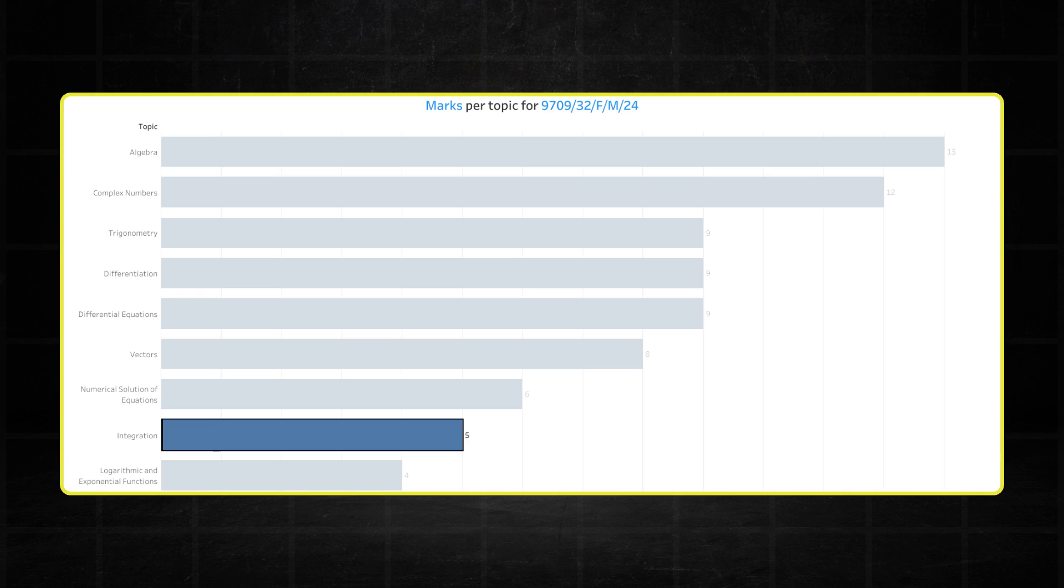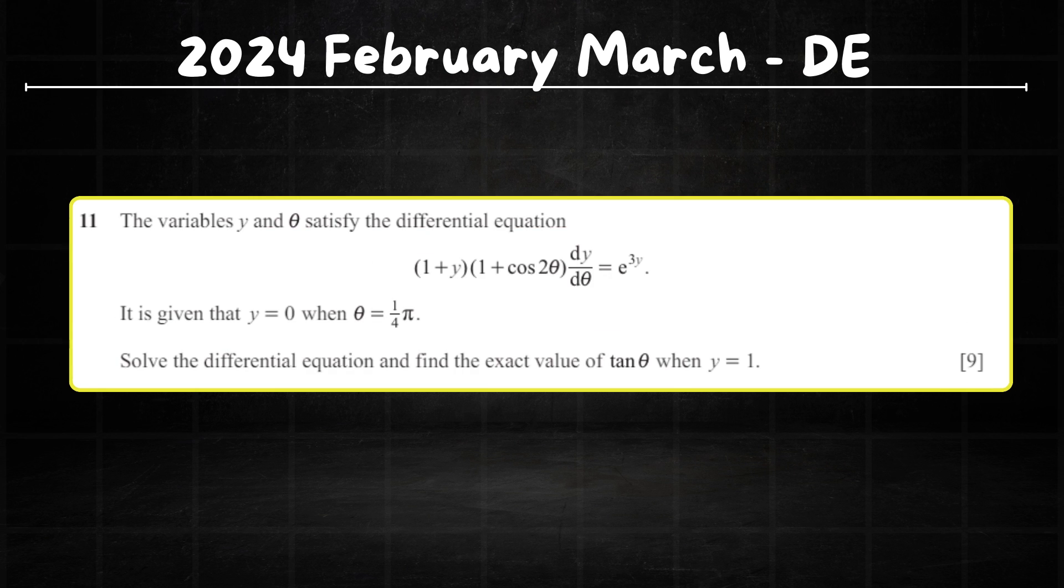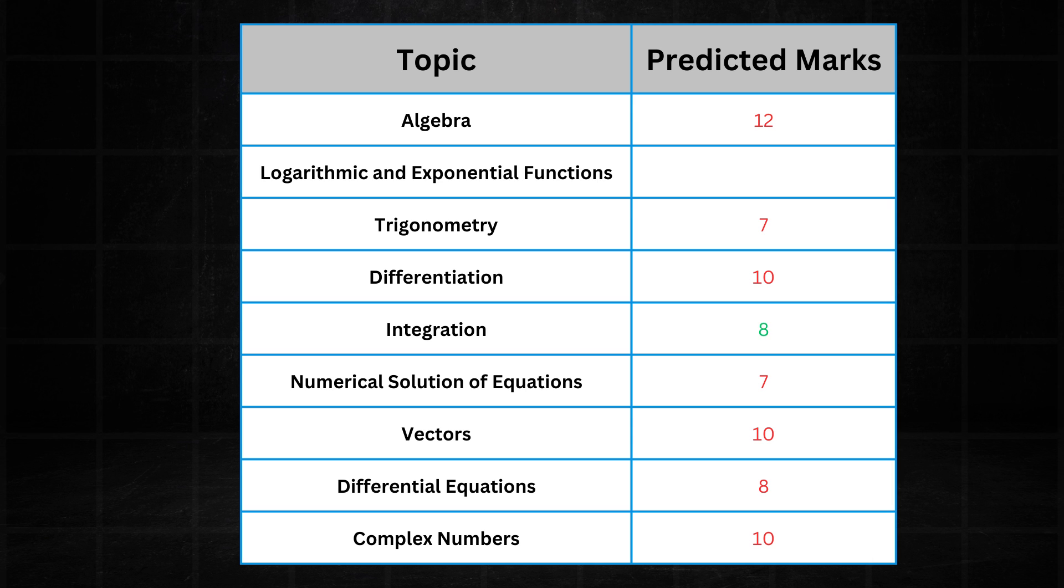Integration is probably the biggest talking point in this paper. It only recorded an underwhelming 5 marks. It usually gets at least 2 questions per paper, but this time it only got one part question that was 5 marks. But don't read too much into this, because the differential equations question, which is technically integration, carried a lot of marks. So I suspect Cambridge's thinking was that they had to remove some marks from integration to allow them to include the monstrous 9 marker for differential equations. I expect integration to be back on par with its average in the May-June series. So I predict it to be around 8 marks per paper.